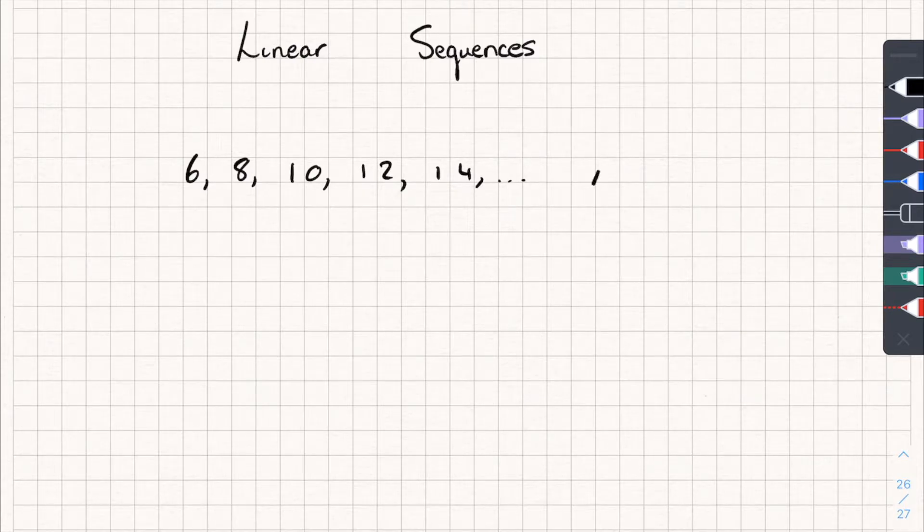All right, so for this sequence I've written here, this has an nth term of 2n plus 4. Now, the way this works is, say I want to know what the first term of the sequence is. First term. I know, but say it wasn't written down.